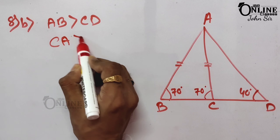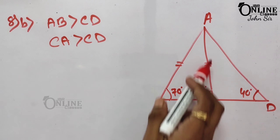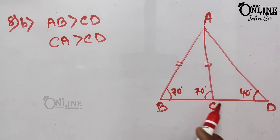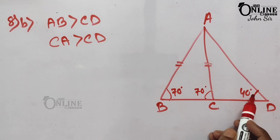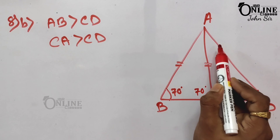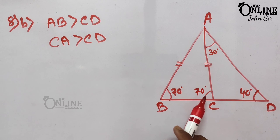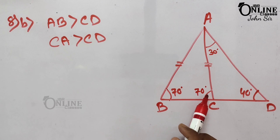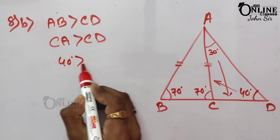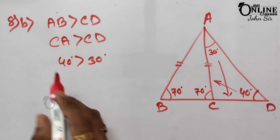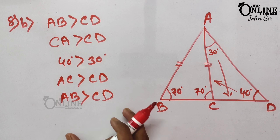If AB > CD, then since AB = AC, we also have AC > CD. So we need to prove CA > CD. The opposite angle of CA = 40°. The 70° is an external angle, and the opposite internal angle equals 40°, making the other internal angle 30°. Since 40° > 30°, we get AC > CD.